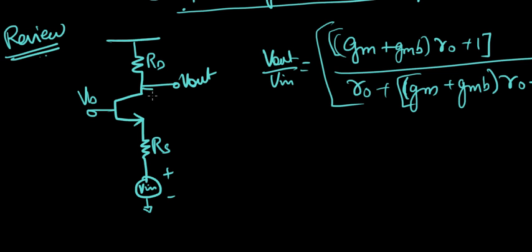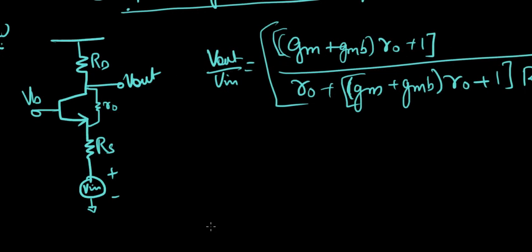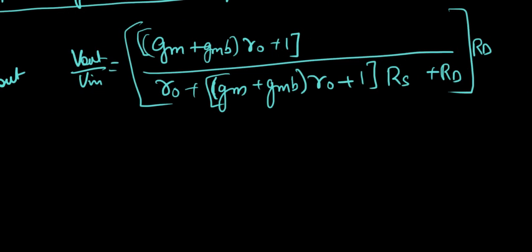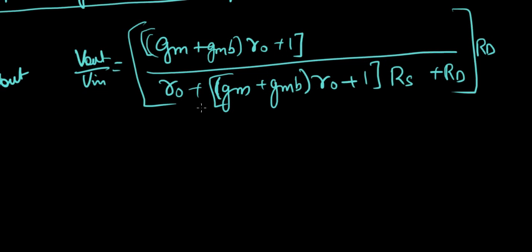I think we also had a load resistance there, so it's understood that it's there. The gain we got from there was this equation. So based on this, we have to calculate — we're going to be using this equation today in this example.